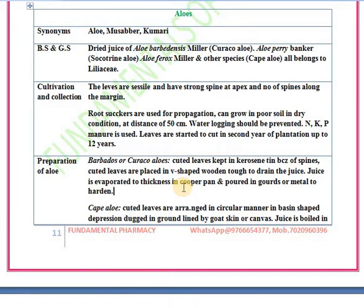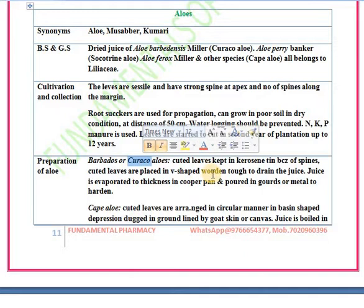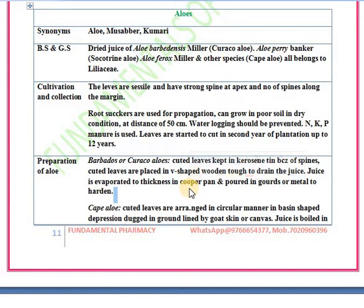There are different preparations of aloe: Barbadoes aloe, Curacao aloe, Cape aloe, Gingiber aloe, and Socotrine aloe. The first one is Barbadoes or Curacao aloe — you cut the leaves and place them in a V-shaped wooden trough to drain the juice. After draining, the juice is evaporated to thickness in a copper pan.